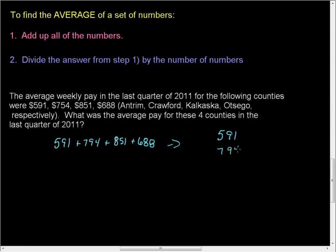I'm going to put them in column form. 591, 794, 851, 688. Okay, we're going to be adding these, all right? So now, remember, neatness counts.